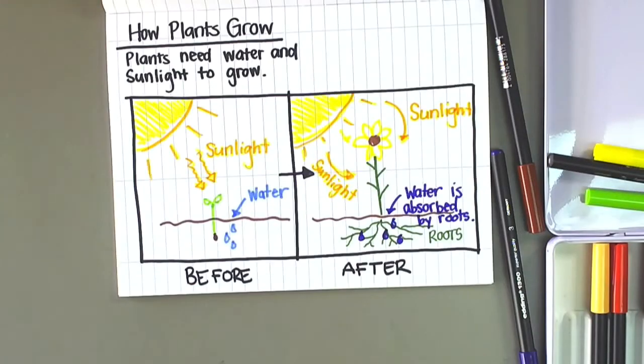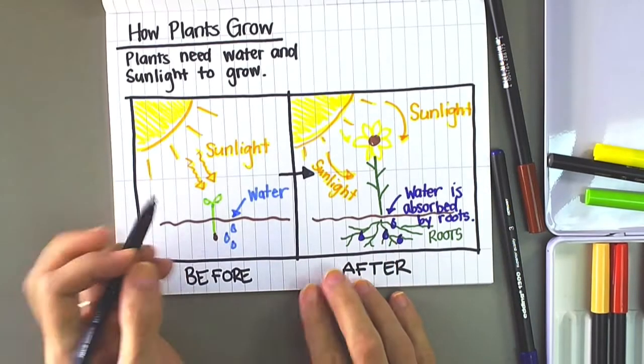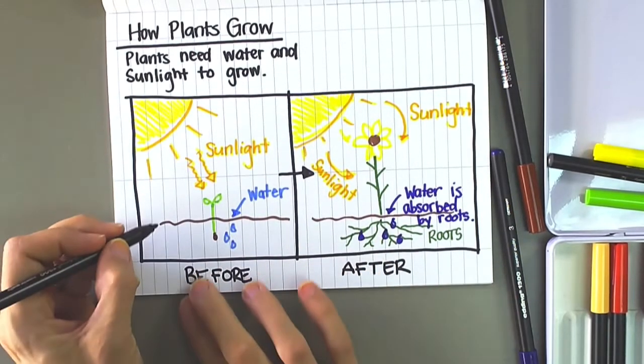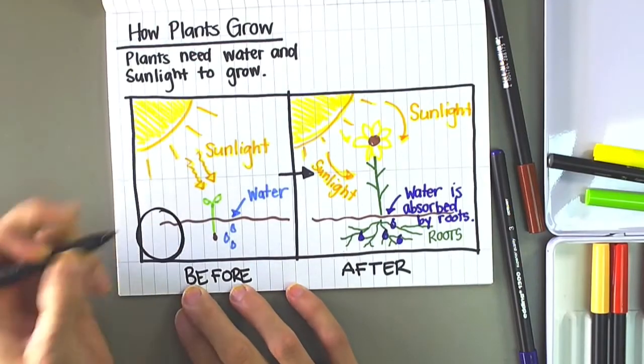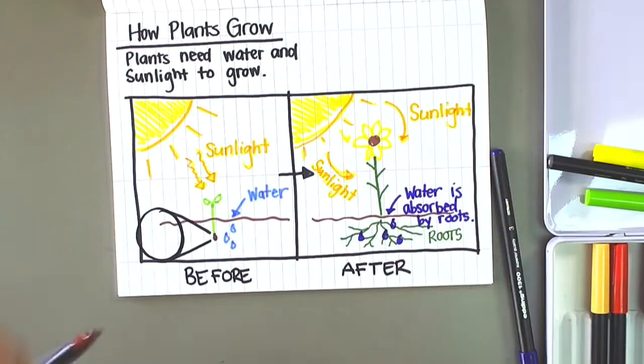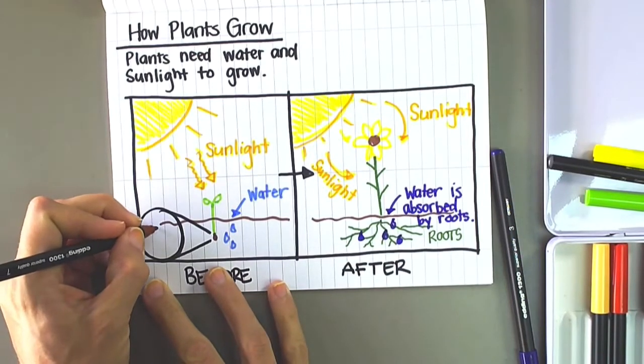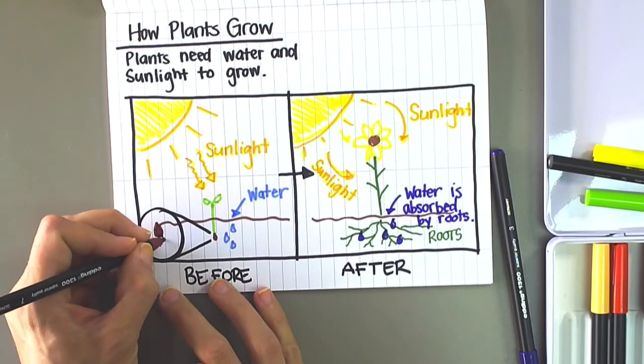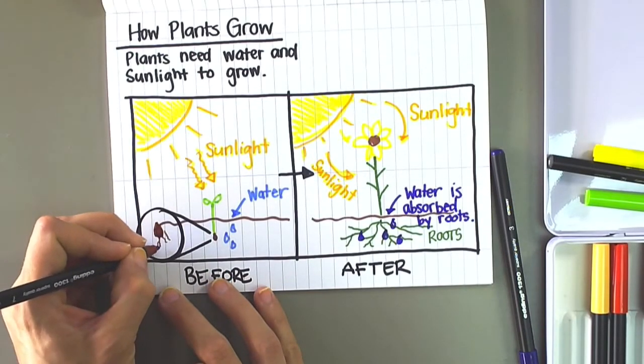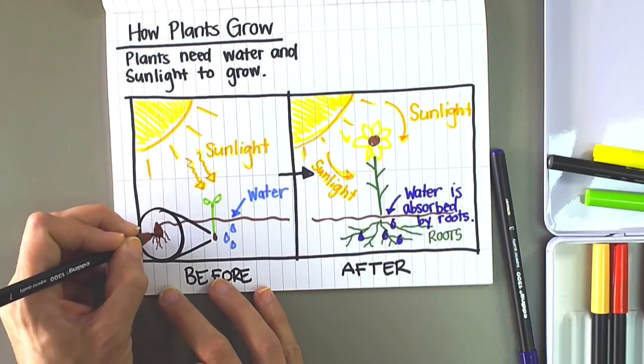One more thing I might want to add to my scientific drawing is a zoom-in. So I'm going to zoom in on this when the seed is becoming a seedling. I want to show that even the tiny seed still has roots coming out of it.